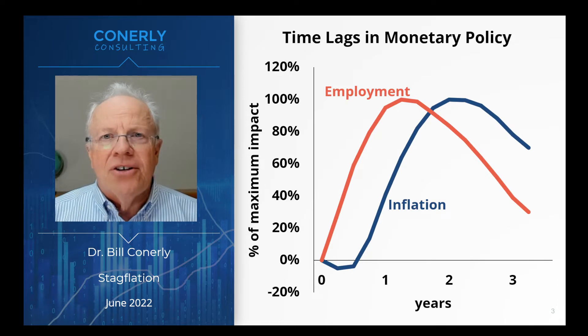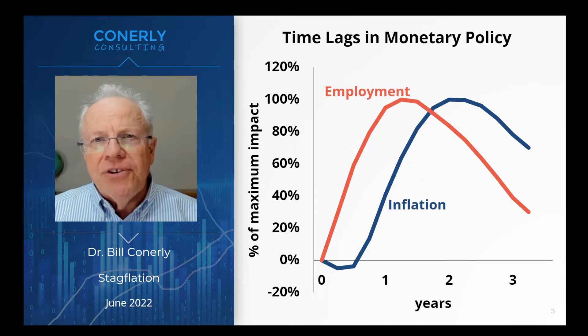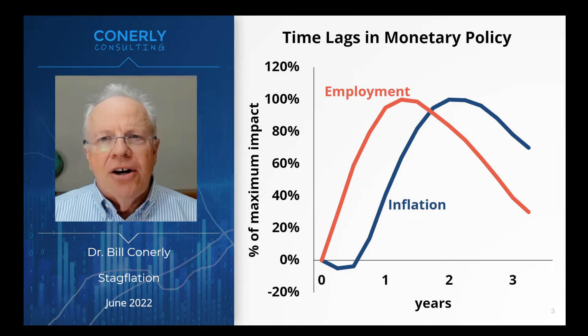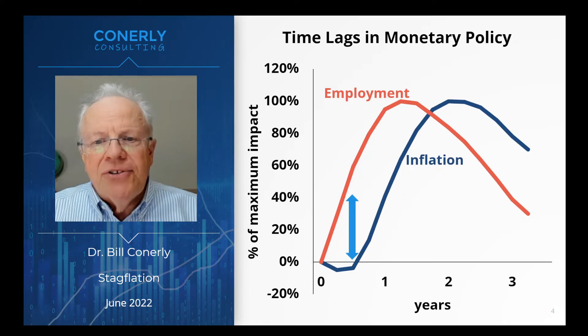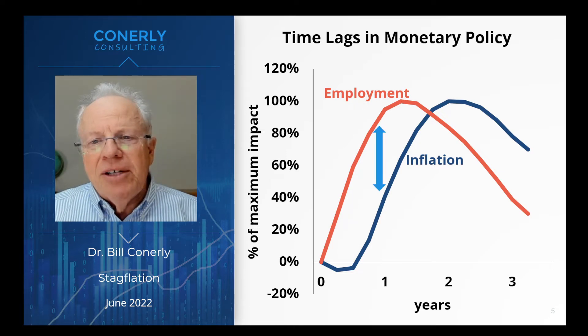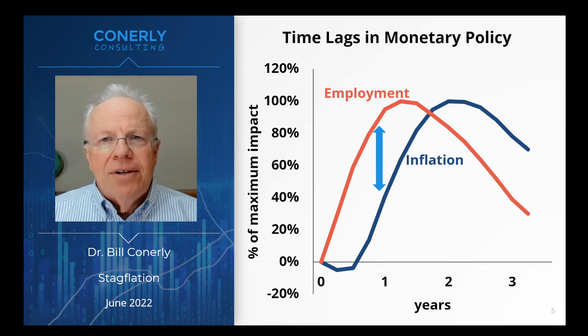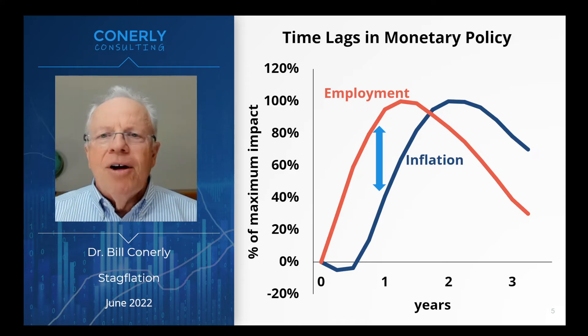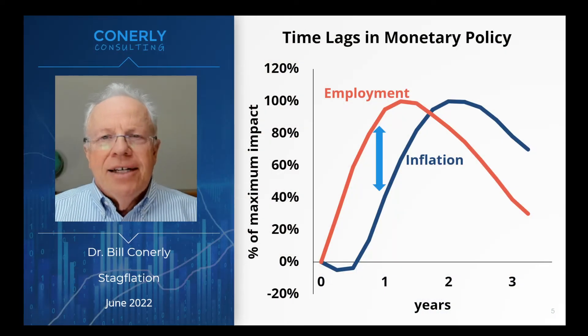Let's put both of those charts on the same page. You can see there's a very pronounced difference. They both have the same shape, but employment changes a lot faster than inflation. So in the first six months, no improvement on inflation, but we're starting to see a weaker job market. Another six months go by and we're seeing a lot of impact on employment, not very much impact on inflation yet. Eventually there will be a slowdown of inflation by the tighter monetary policy, but it doesn't happen right away. That gap between the two lines is a representation of stagflation.